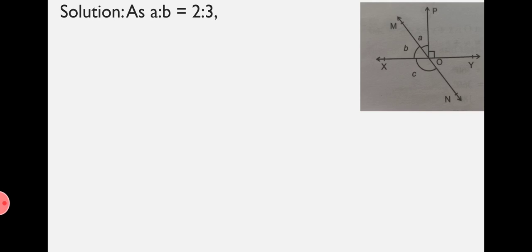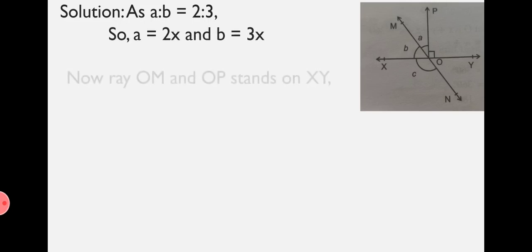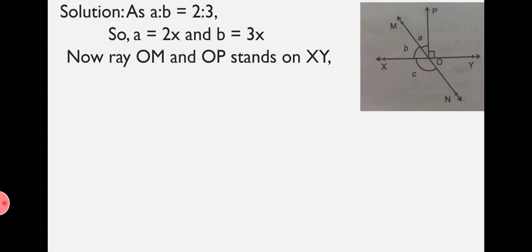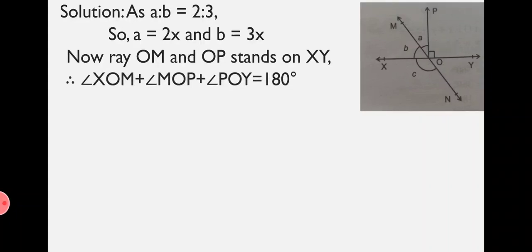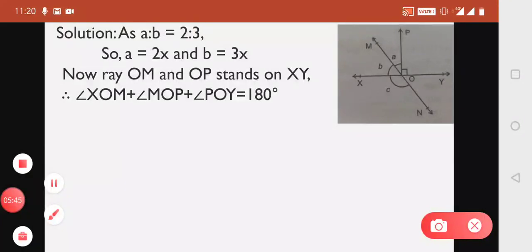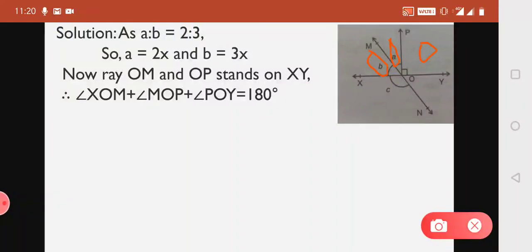For the solution, as the ratio of A to B is given as 2 to 3, we write A equals 2X and B equals 3X. Now, Ray OM and OP stand on XY. Therefore, Angle XOM plus Angle MOP plus Angle POE equals 180 degrees. This is Angle XOM, given as B; Angle MOP, given as A; and Angle POE, which is 90 degrees. This makes a Linear Pair according to the Linear Pair Axiom, as these two rays stand on line XY.